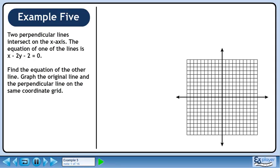Two perpendicular lines intersect on the x-axis. The equation of one of the lines is x - 2y - 2 = 0. Find the equation of the other line. Graph the original line and the perpendicular line on the same coordinate grid.